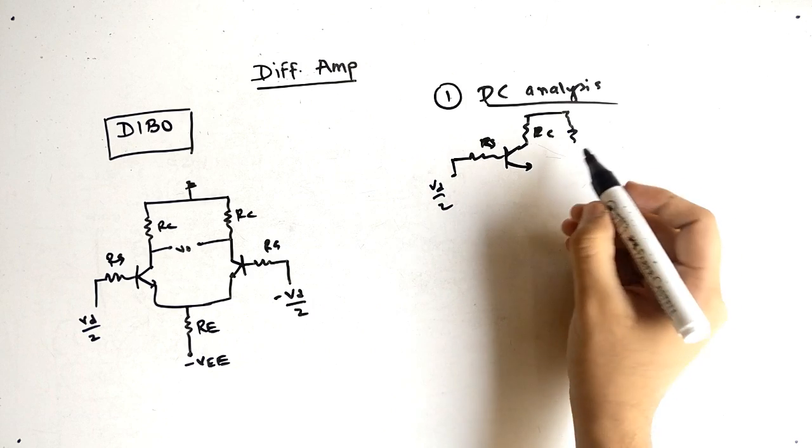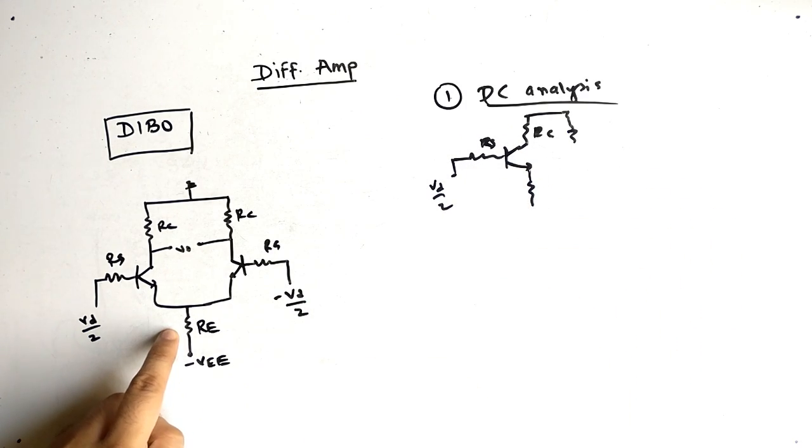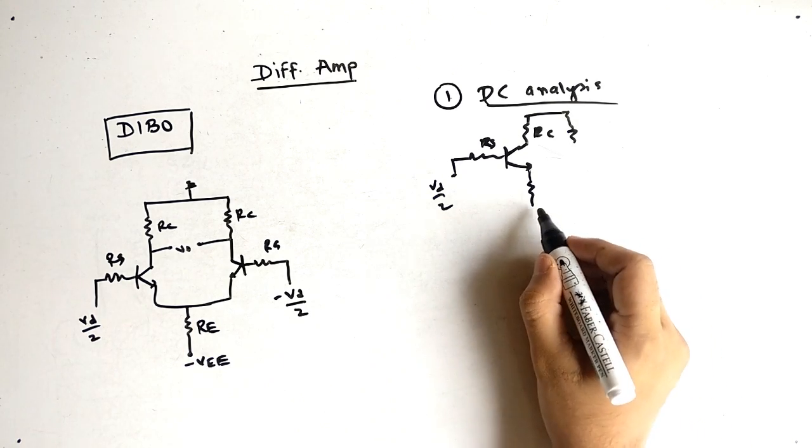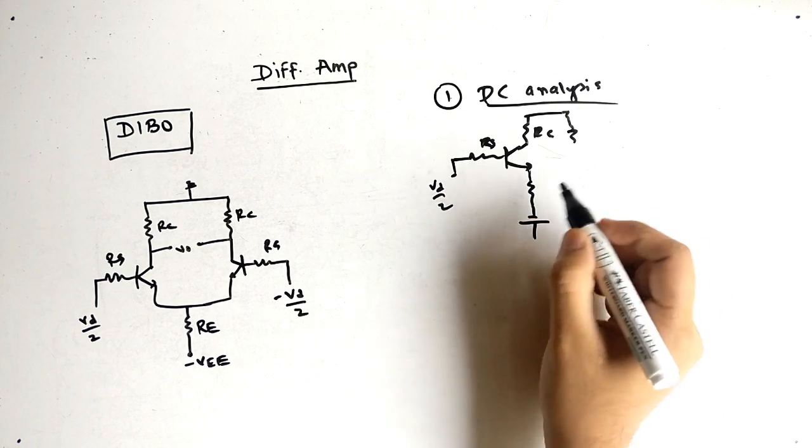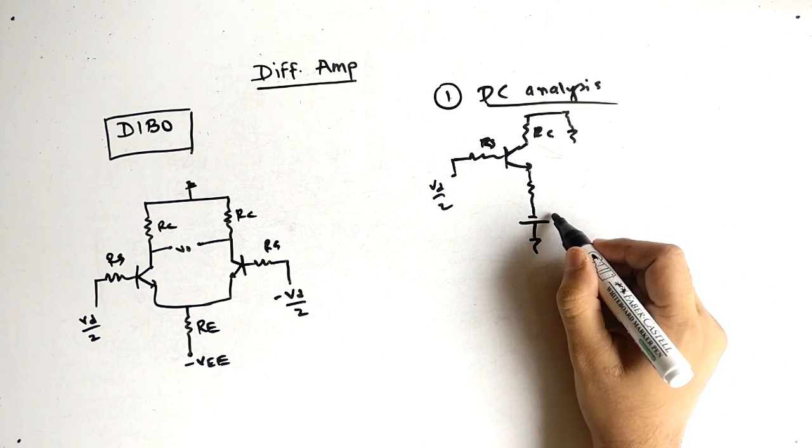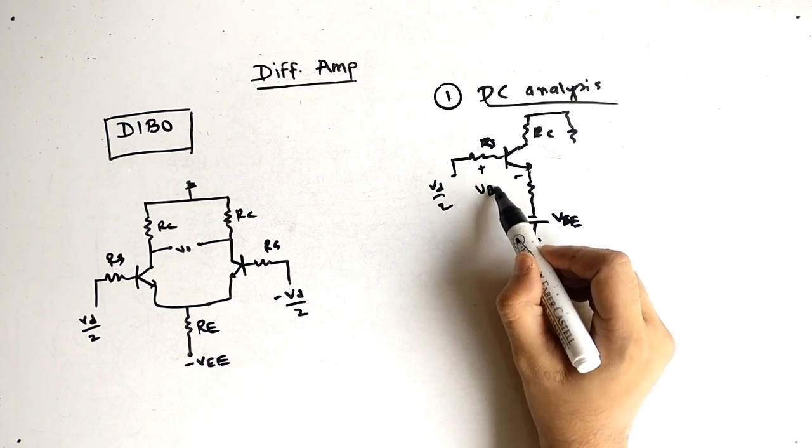RC, RS we can use. This input is Vd by 2, that also we can use. But here you have to note, if we break this circuit then what will be the change here? See, we have voltage that is VEE. So the voltage here is VEE, the voltage here is VBE.